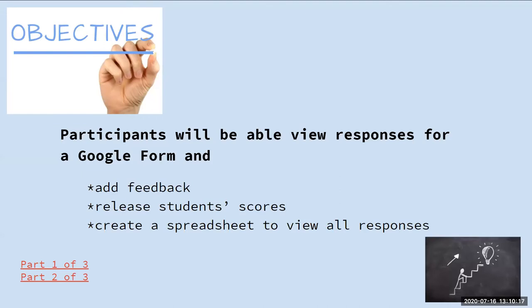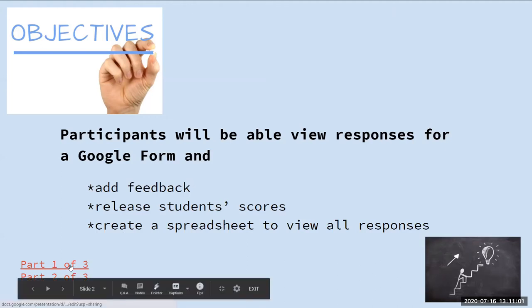Today you're going to view your responses on a Google Form. I'm going to show you how to add feedback for users — both feedback for all users and personal feedback for each individual. I'll show you how to release student scores, and lastly how to create a spreadsheet to view all of the responses. If you'd like to view the slides for previous presentations, I've hyperlinked those Google Slides on the bottom right.